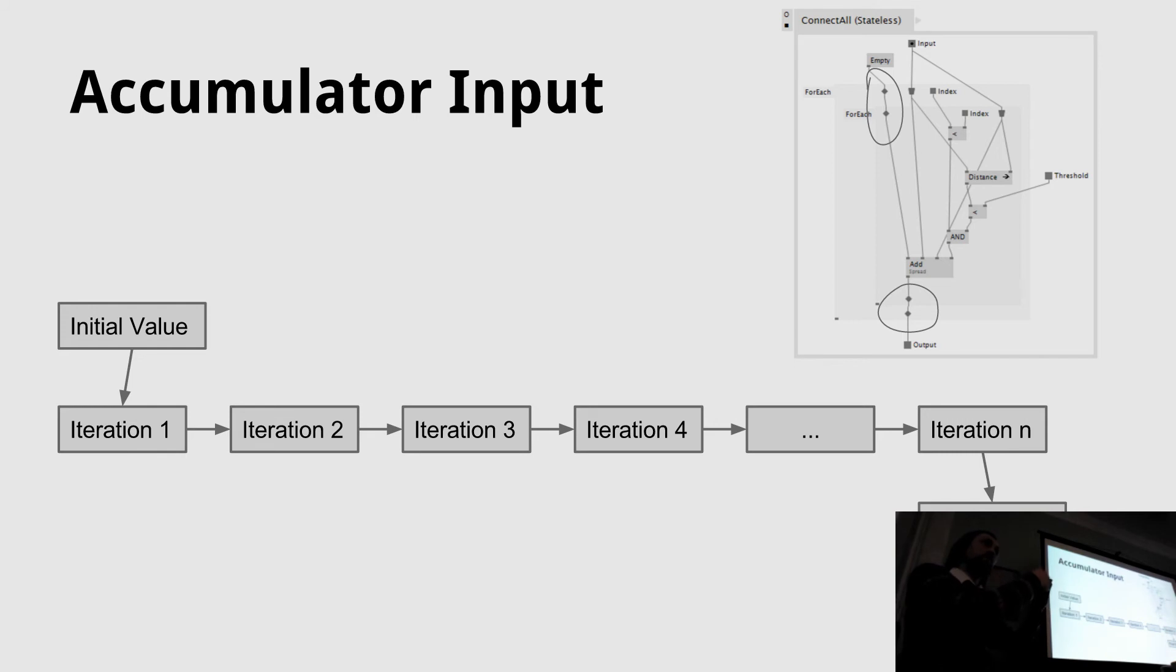You start with an initial value, and for each iteration you can define a new value that you will get in the next iteration. So it has this kind of data flow; it is like a variable in the loop that you can write to in each iteration, and then you get it in the next iteration.